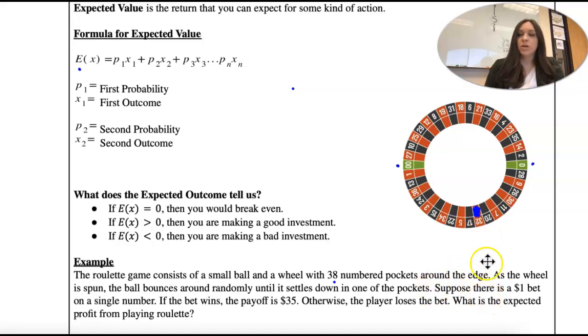Suppose there's a $1 bet on a single number. So you're going to bet, like, I think it's going to be a six, and you'd have to pay a dollar to make that bet. If the bet wins, you get $35. Otherwise, you'll lose your bet. You'll lose the dollar. What's the expected profit from playing roulette?